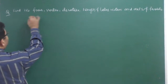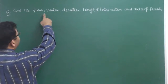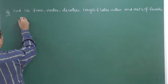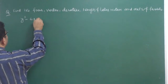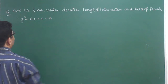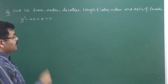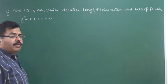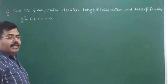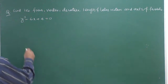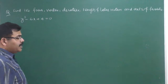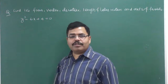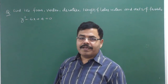So, we need to find the focus, vertex, directrix, length of latus rectum, and axis of the parabola if the equation is y² - 6x + 4 = 0. Now, how do we deal with this? This is a parabola but we are not able to recognize what type it is. Does this parabola pass through the origin? No, because x = 0, y = 0 does not satisfy the equation of the parabola.